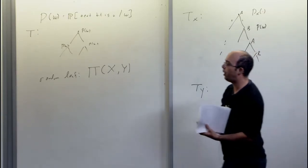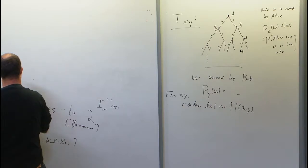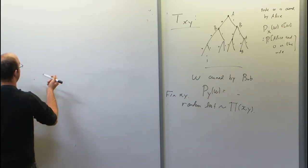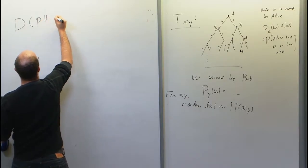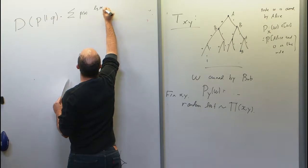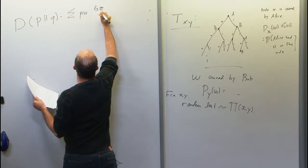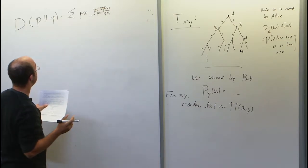A very useful way of measuring information in this context is using the Kullback-Leibler divergence. The KL divergence of two distributions p and q is defined as the sum over x of p(x) log(p(x)/q(x)).